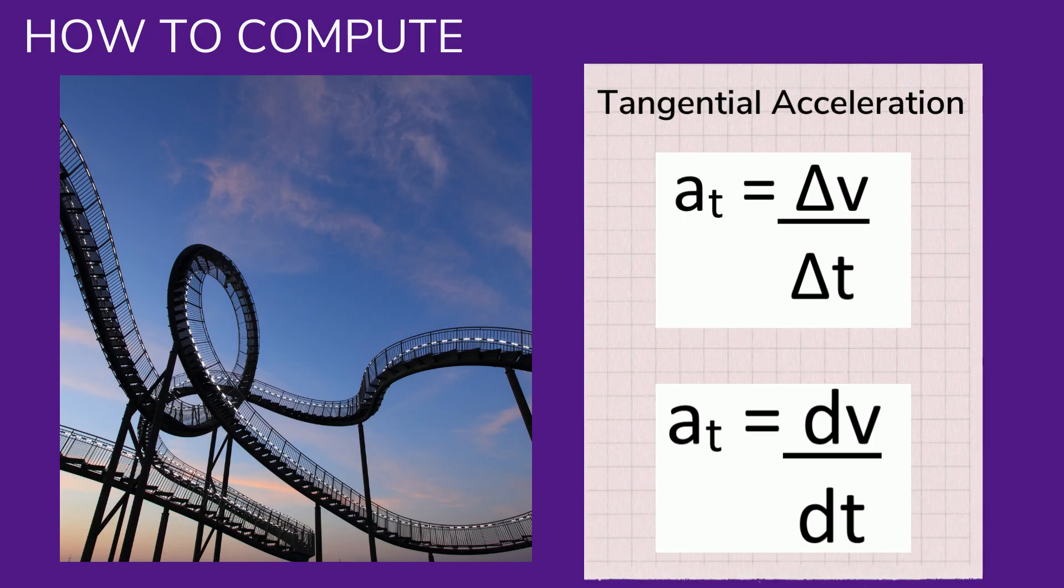In non-uniform circular motion there is a tangential acceleration in addition to centripetal acceleration. The direction of tangential acceleration is tangent to the circle whereas the direction of the centripetal acceleration is radially inward toward the center of the circle. Tangential acceleration is simply the derivative of the velocity at any given point.